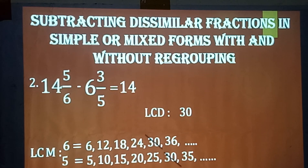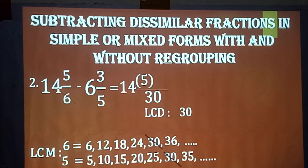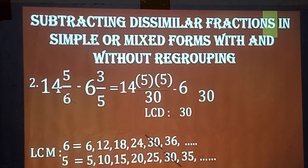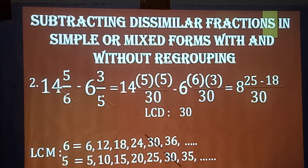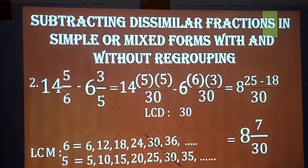Copy the whole number 14, then 30 as the new denominator. 30 divided by 6 equals 5, times 5; minus copy the whole number 6, and 30 divided by 5 equals 6, times 3. So: 14 minus 6 equals 8, and 5 times 5 equals 25 minus 6 times 3 equals 18, over 30. Twenty-five minus 18 equals 7. The answer is 8 and 7 over 30.